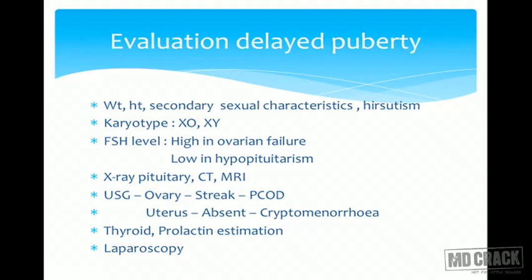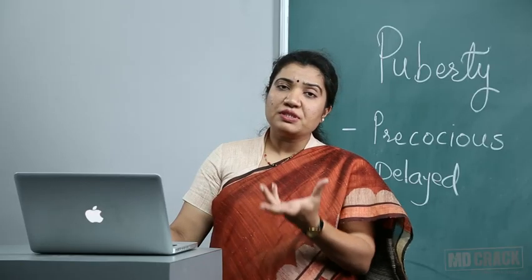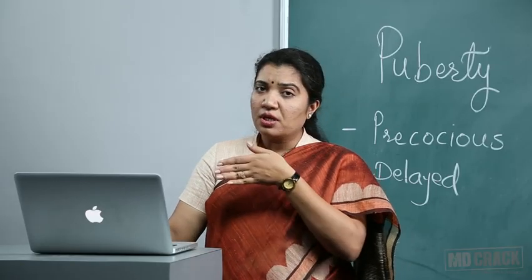FSH levels guide diagnosis: high FSH suggests ovarian failure; low FSH suggests hypopituitarism. X-ray of the pituitary fossa or CT/MRI can identify empty sella turcica syndrome or pituitary tumors. Ultrasound reveals ovarian structure — streak ovaries, PCOD, absent uterus — and can identify cryptomenorrhea if the uterus is distended with collection due to a distal block.